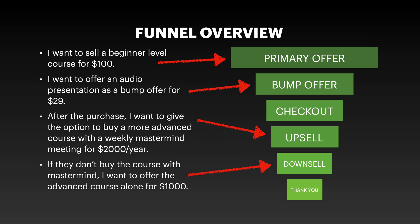I'm going to give you an overview of the funnel I'm going to be building throughout this video. I want to sell a beginner level course for $100 - that's going to be our primary offer. We're going to include a bump offer which will be a digital download - an audio file you'll be able to download - for an additional $29. Then instead of going right to the thank you page, we're going to hit them when their wallet is still open. We'll go right into an upsell where they can buy a $2,000 per year advanced course with a weekly mastermind.